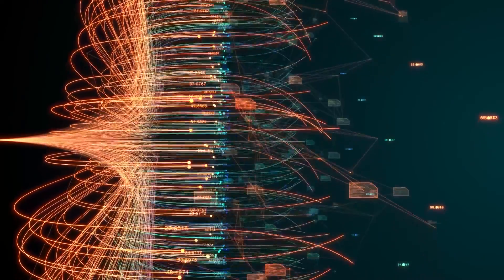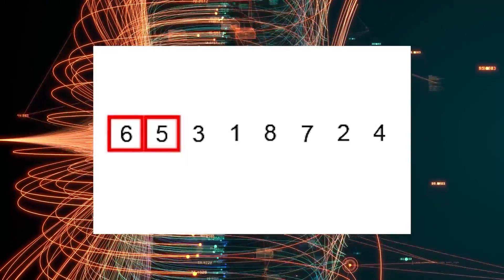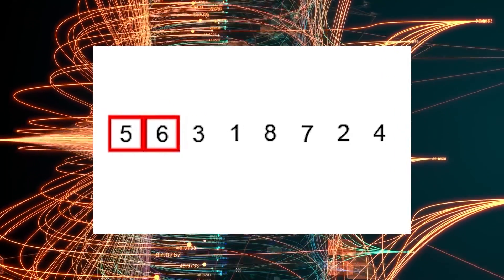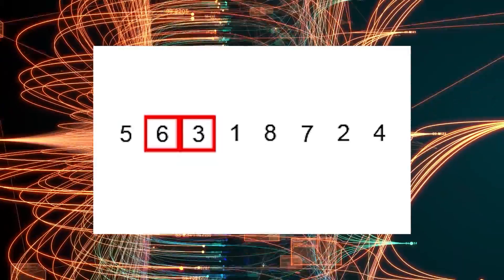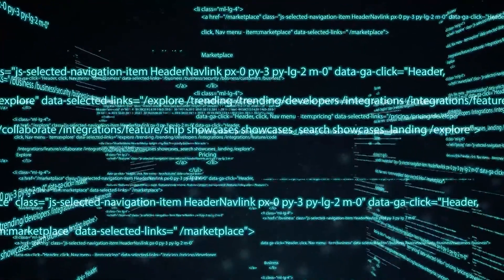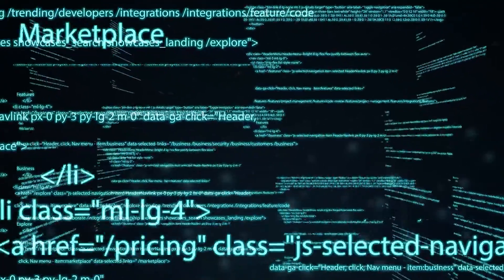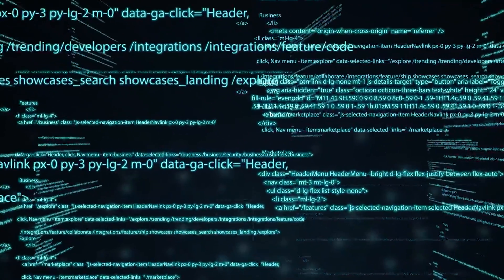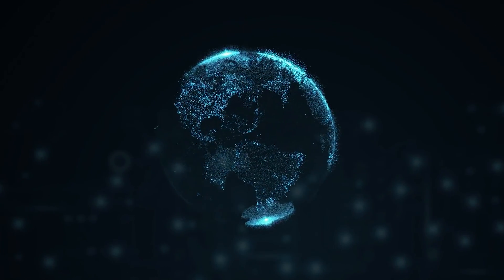Similarly, an algorithm is a set of instructions that a computer follows to solve a problem. For example, an algorithm for sorting a list of numbers might have the following steps: compare the first two numbers in a list; if the first number is greater than the second number, swap them; repeat steps 1 and 2 until the list is sorted. Algorithms can be used to solve a wide variety of problems, from simple tasks like sorting a list of numbers to complex tasks like recognizing objects in images or translating languages.